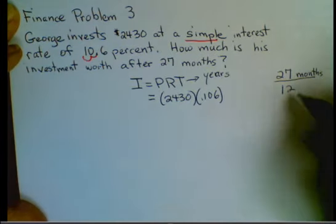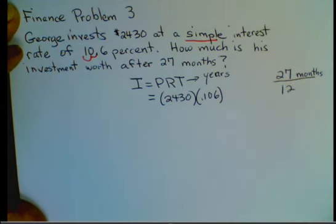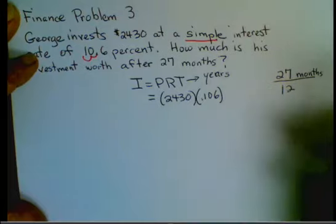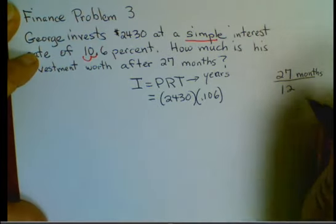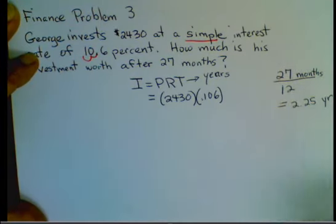So we'll divide this fraction out. That will give us a part of a year. So 27 divided by 12. Punch that into your calculator. Make sure you go top to bottom. I get 2.25. Now we are in years.